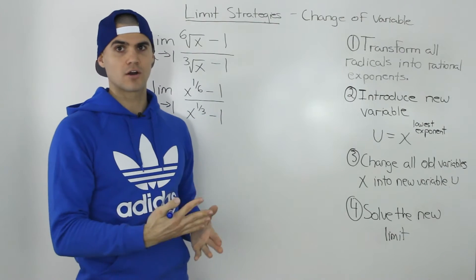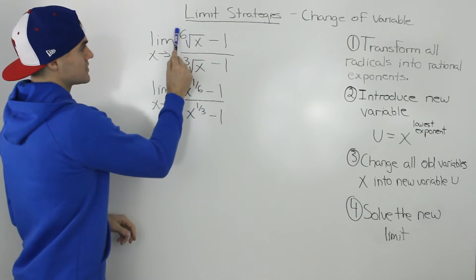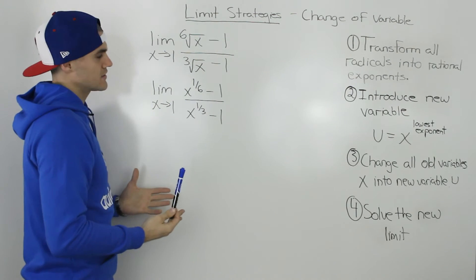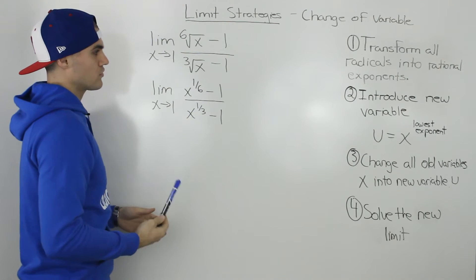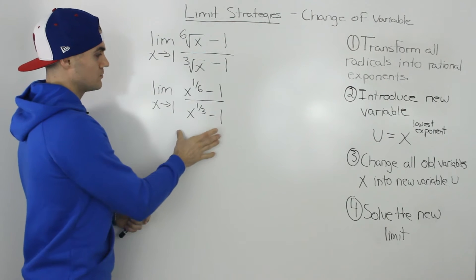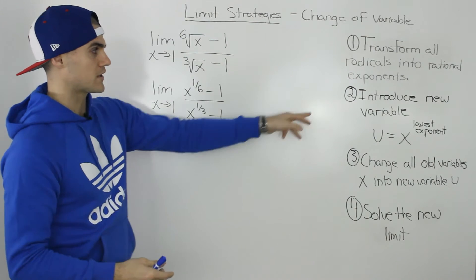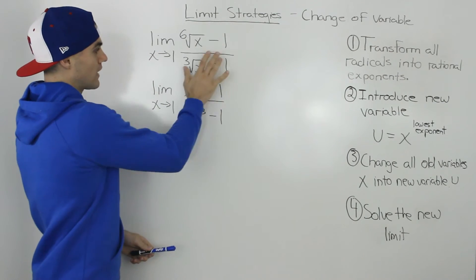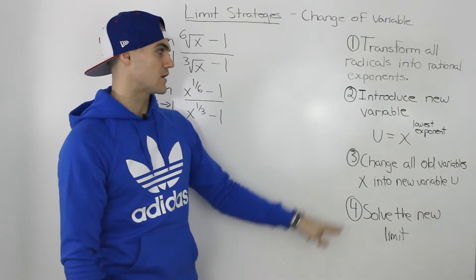Step one: take all the radicals in our limit and change them into rational exponents. The sixth root of x becomes x to the power of one over six, and the third root of x becomes x to the power of one over three. Sometimes limits are already given with rational exponents — great, you can skip step one. But if they're given as radicals, you must convert them.